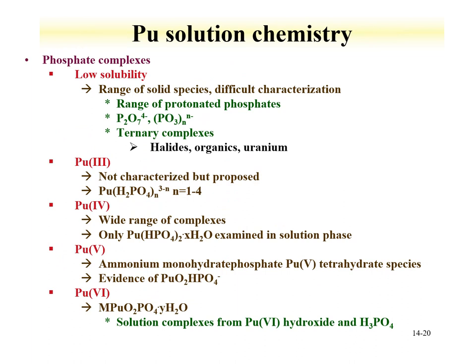Phosphate complexes have extremely low solubility, and characterization is difficult because the ligand itself has a number of different forms. Plutonium-3 phosphate has been proposed but not characterized. Plutonium-4 exhibits a wide range of phosphate complexes that tend to have very low solubility — forming the plutonium-4 phosphate in solution is a good way to remove it as a precipitate. There is some evidence of plutonium-5 phosphate, and plutonium-6 phosphates have been found with a number of different species and coordinating metal ions.